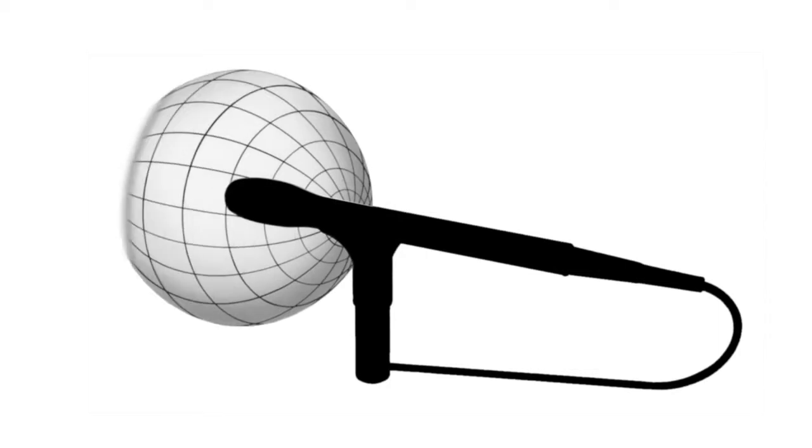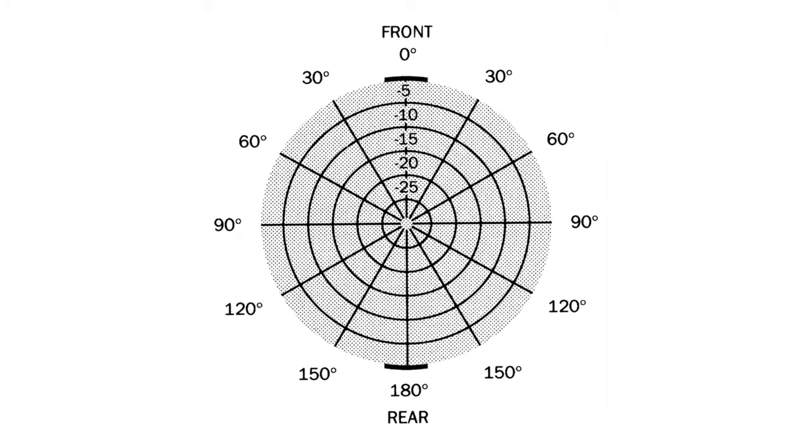An omnidirectional microphone has the same output regardless of its orientation to the sound source. Its polar pattern is a sphere. On paper, it looks like a nearly smooth circle.